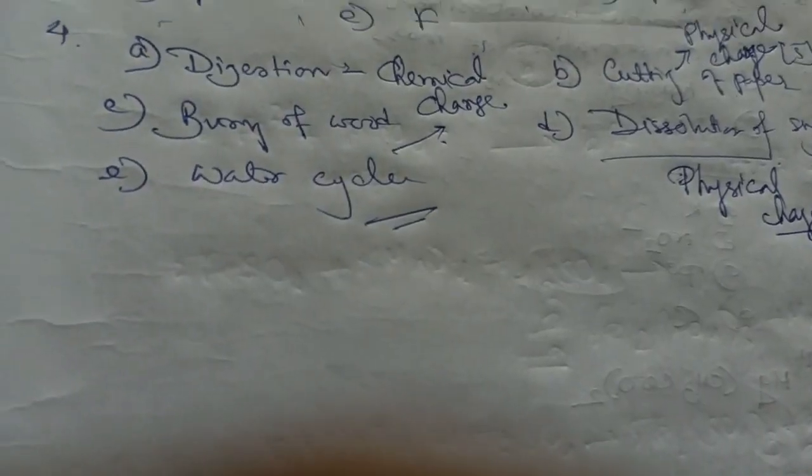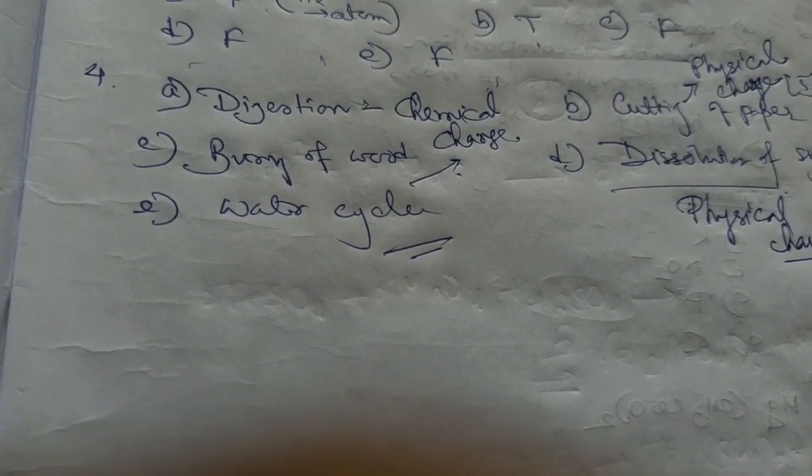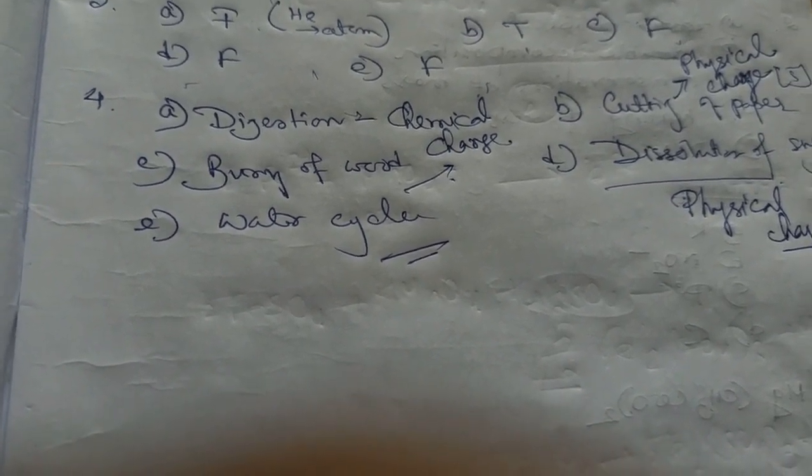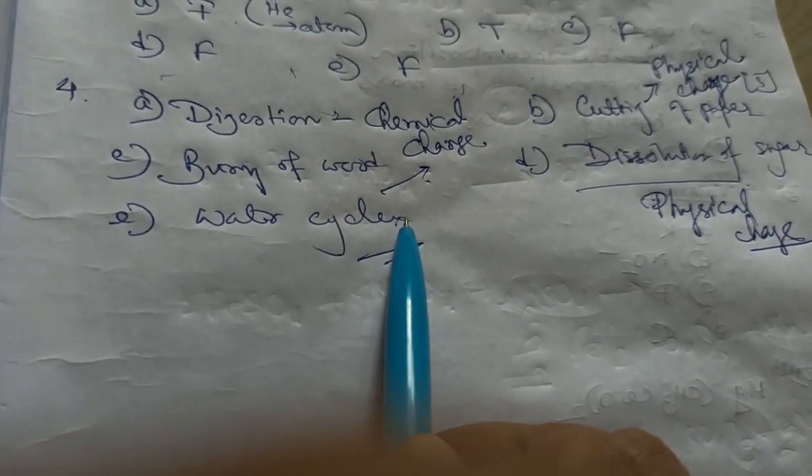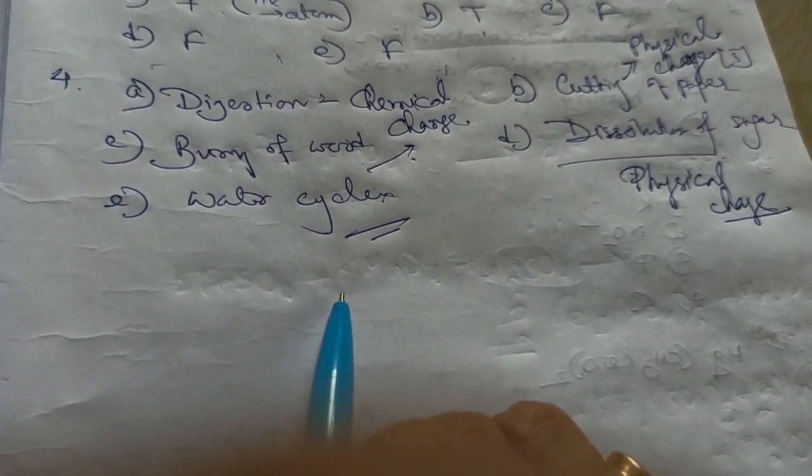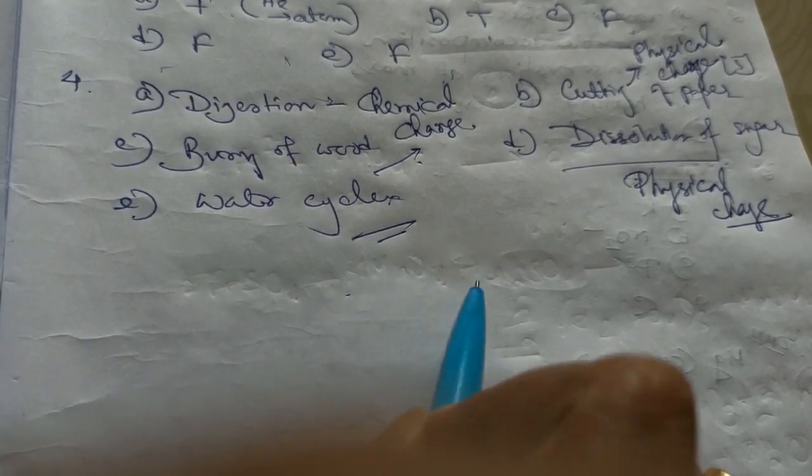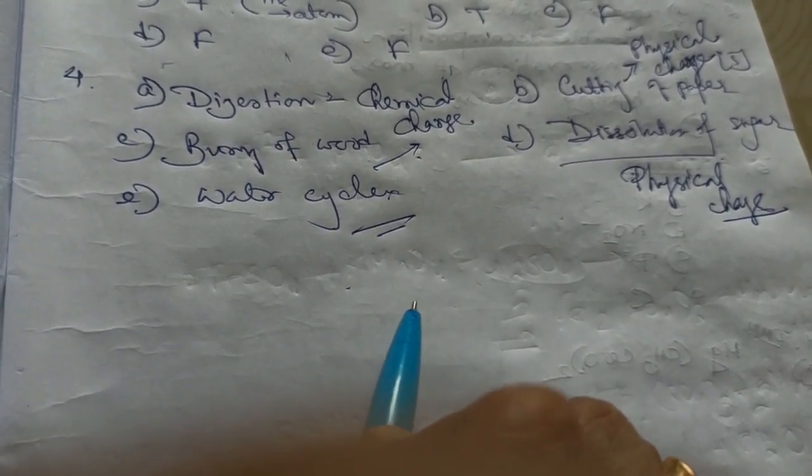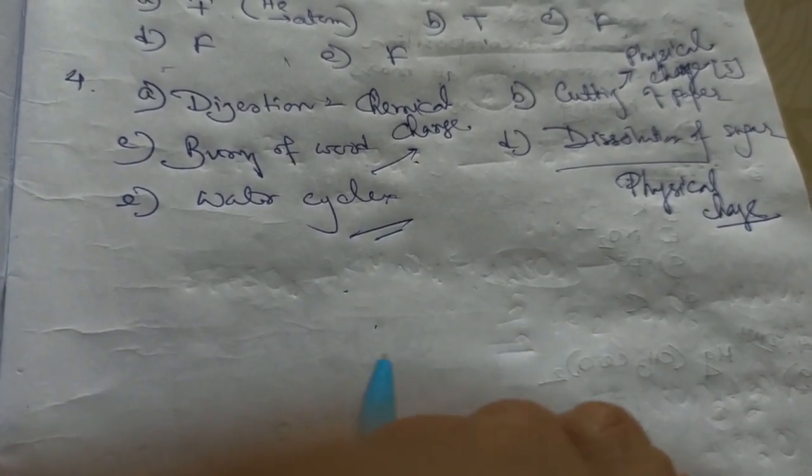And water cycle, we know that water cycle is a physical change because it's a continuous process. Water cycle means from water then to vapor and then evaporation is occurring, condensation is occurring, and again precipitation in forms of rain, hailstones, snows and we are getting back the water again. So it's a continuous process.